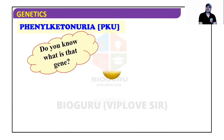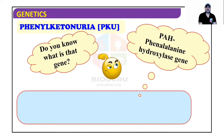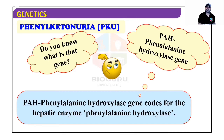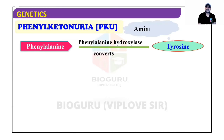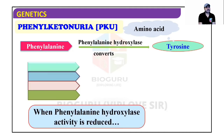The gene responsible for PKU is PAH — Phenylalanine Hydroxylase gene. This gene codes for the hepatic enzyme phenylalanine hydroxylase, which converts phenylalanine to tyrosine. Tyrosine is an important amino acid for specific enzymes. When phenylalanine hydroxylase activity is reduced or destroyed, phenylalanine cannot be converted to tyrosine.